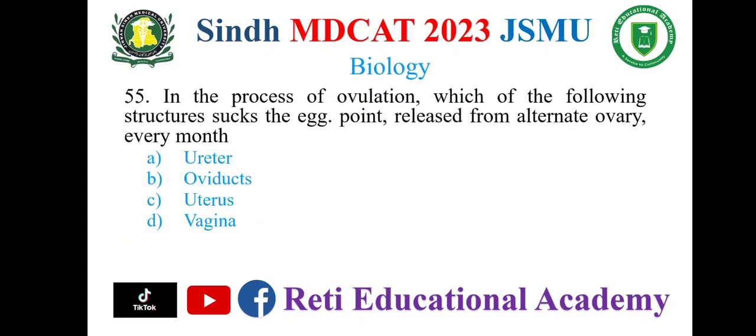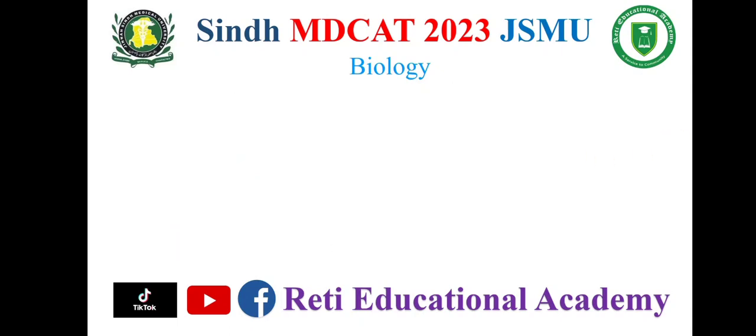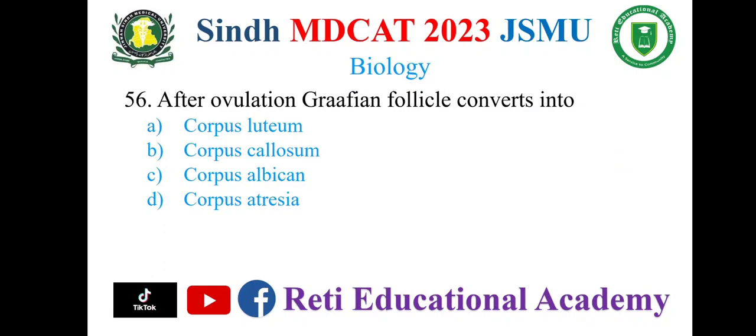Question 55: In the process of ovulation, which of the following structures sucks the egg released from the alternate ovary every month? A. Ureter, B. Oviducts, C. Uterus, D. Vagina. The correct option is B: Oviducts.